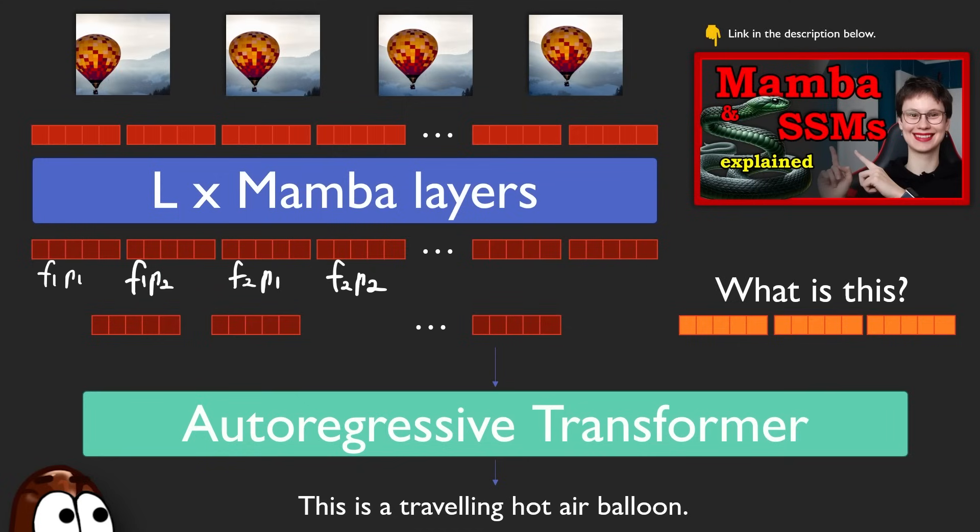The new thing here for the Mamba layers is that they are bi-directional. They scan once forward and once backward through the video, enriching every token with context from the entire video, left and right. Think of it as giving each frame a memory of what happened before and what's coming next.